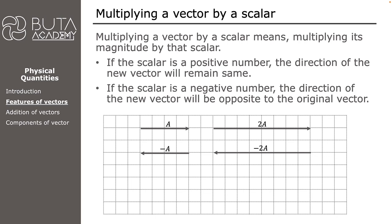Not only integers but scalars can also be real or decimal numbers. Multiplying a vector by one-half (or 0.5) will halve its length. If we multiply vector A by negative five-halves (or negative 2.5), the length becomes ten units since 2.5 times four equals ten, but the direction will be leftwards.